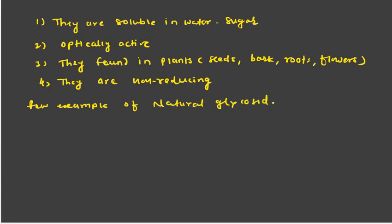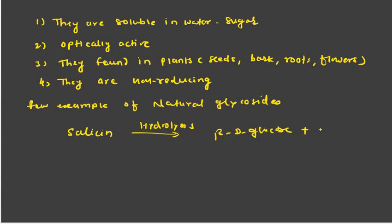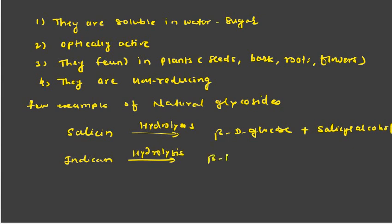Here are a few examples of natural glycosides. Salicin on hydrolysis gives beta-D-glucose (the sugar part) and salicyl alcohol (the non-sugar part). Another example is indican, which on hydrolysis also gives beta-D-glucose, and the non-sugar component here is 3-hydroxyindole.